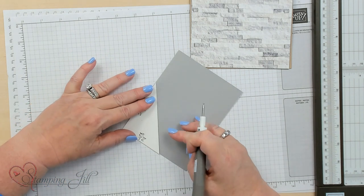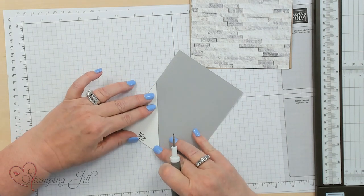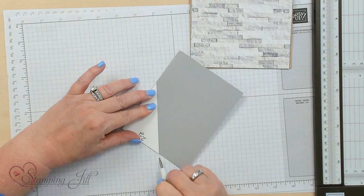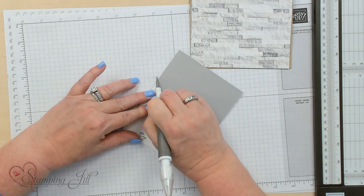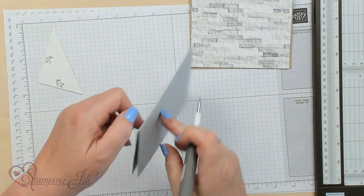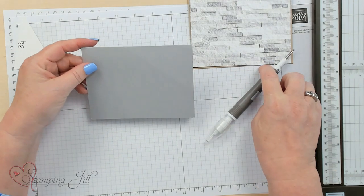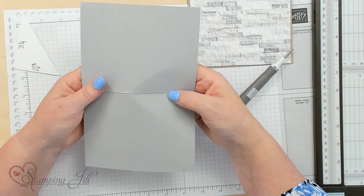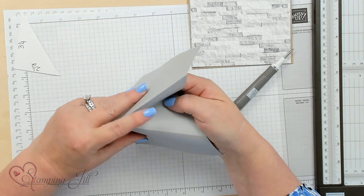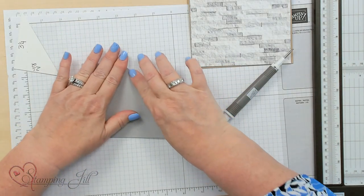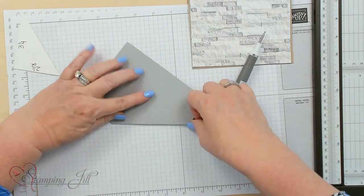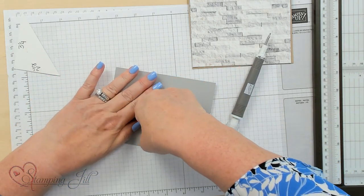Line that up and you should see a little bit coming through of that score. I'm going to do that same thing and press it down. Now I'm going to go ahead and invert this on the inside of the card and burnish that down. You can do that with your fingernail or you can use a bone folder too.